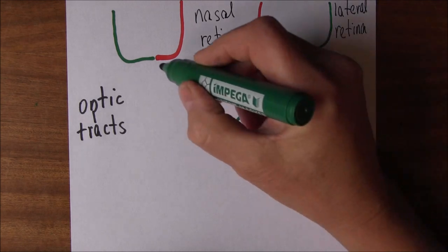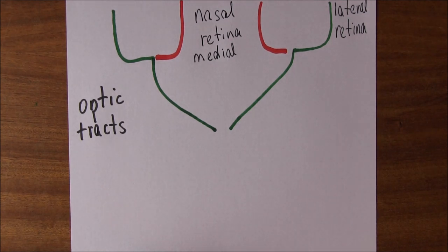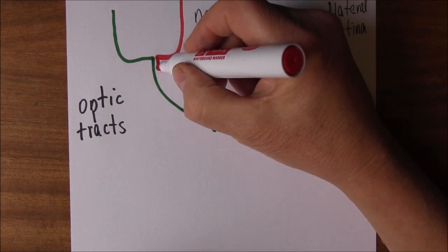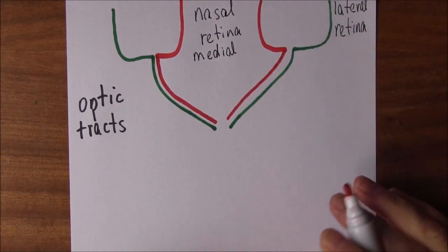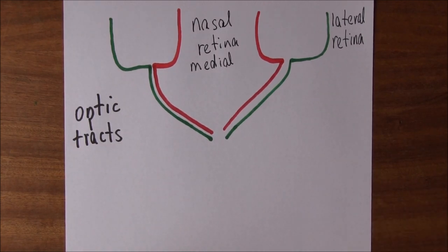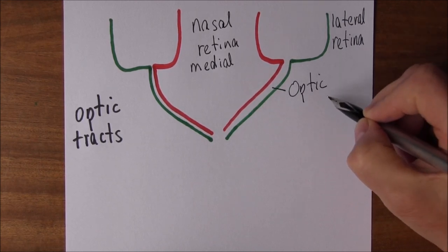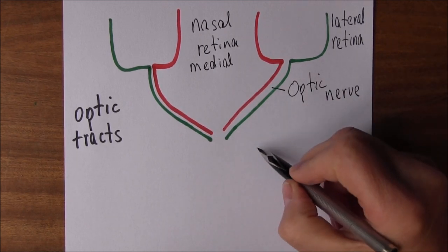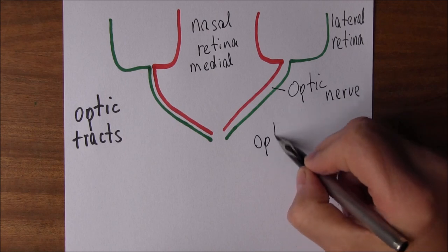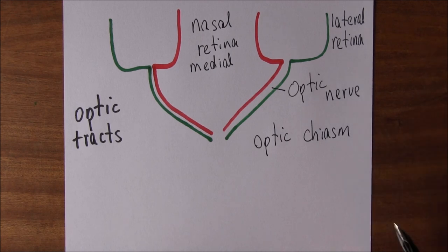From this side it travels back like this as well. The information from the nasal retina is going to travel back this way and that way. Here is the optic nerve leaving the eye, and there's going to be this join-up in a cross-shaped structure — optic chiasm means cross — where the nerve fibers cross over.